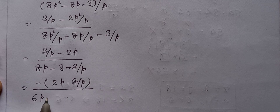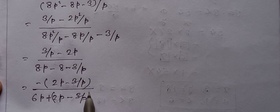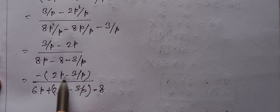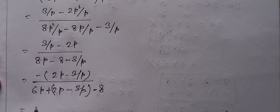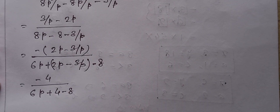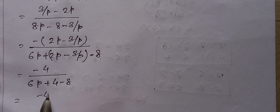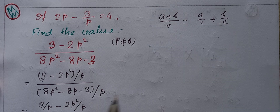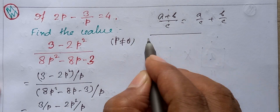We can rewrite 8p as 6p plus 2p. So the expression becomes: 2p minus 3 by p in the numerator, and 6p plus 2p minus 3 by p minus 8 in the denominator. Substituting 2p minus 3 by p equals 4 gives us 4 minus 4 by 6p plus 4 minus 8, which simplifies to minus 4 by 6p minus 4.